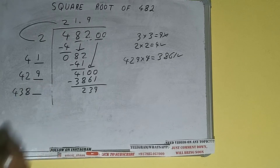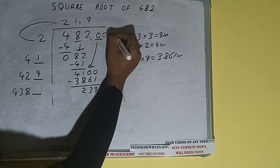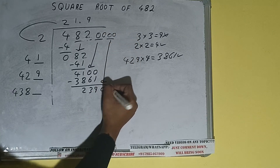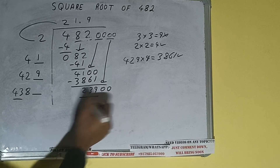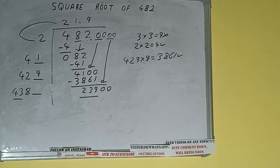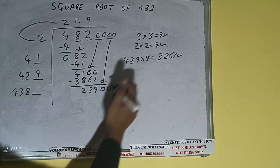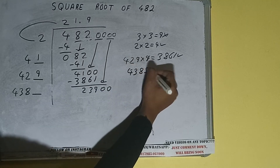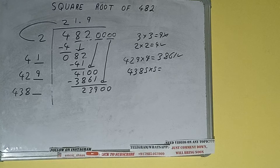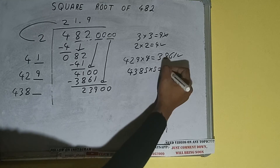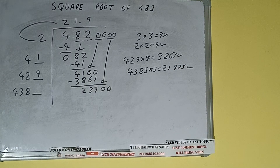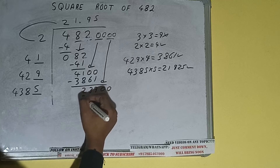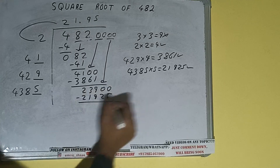Bring the next pair of zeros down and it will be 23900. Compare 43 and 239: 43 times 5 is 215, so we can try 5 times. 4385 into 5 — we'll be having 21925, which is good to take. So 5 here and 5 here: 21925 subtract.